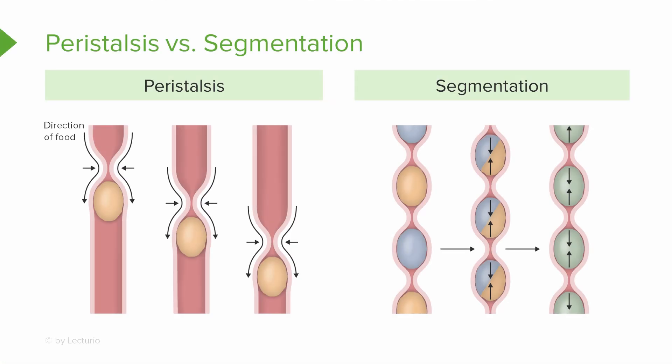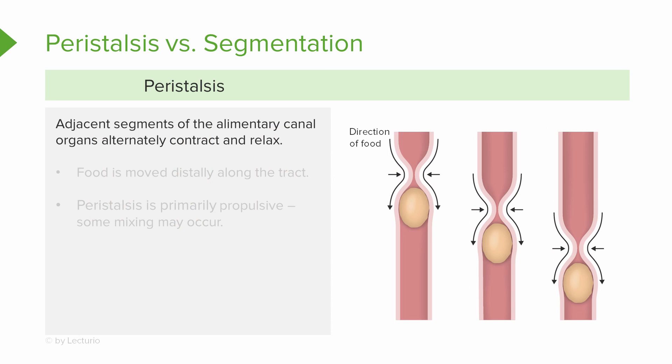Two processes that involve the movement of food through the GI tract are peristalsis and segmentation. While they have some similarities, they also have some differences. In peristalsis, adjacent segments of the alimentary canal are going to alternately contract and relax. This causes food to be moved distally along the tract and is the primary propulsion mechanism of the digestive system, although there is also some mixing that does take place.